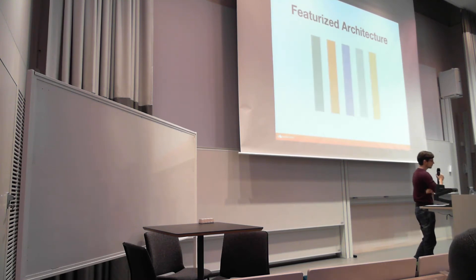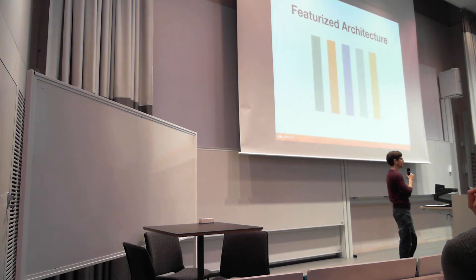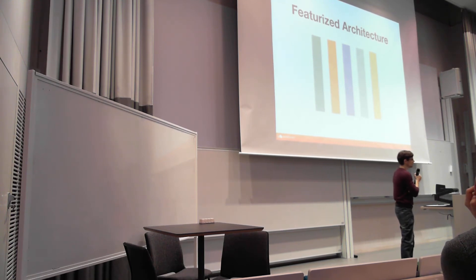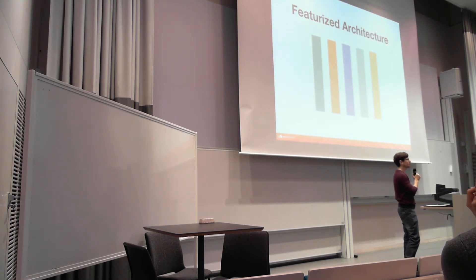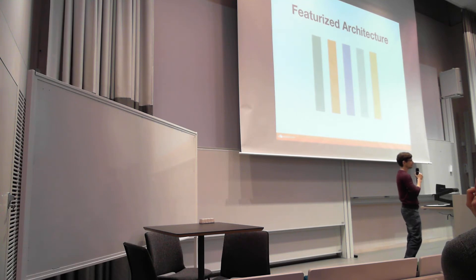A more interesting thing is we also restructured how we package our code. We used to structure code based on technical concerns — we would have packages like 'these are all our entities,' 'these are all our fragments,' 'this is code related to API and stuff.' This introduces a lot of friction around features, especially if you plan to grow your team and split them into multiple feature teams. You always have to work across the entire package. So what we do now is package up the code based on features.